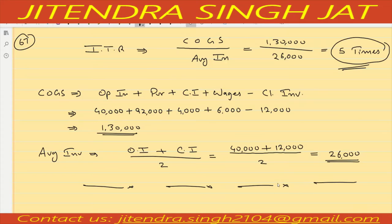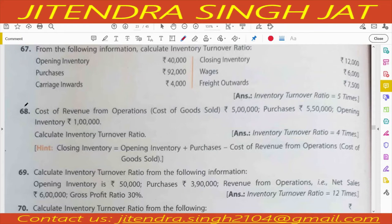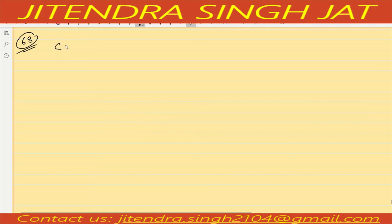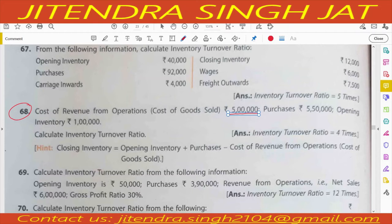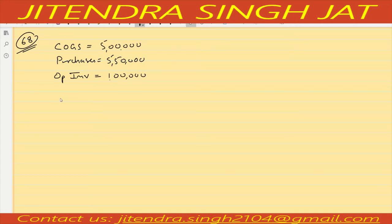Question number 68: Cost of revenue from operations (Cost of Goods Sold) is given as 5 lakh. Purchases are given as 5 lakh 50,000. Opening inventory is given as 1 lakh. Closing inventory is not given.